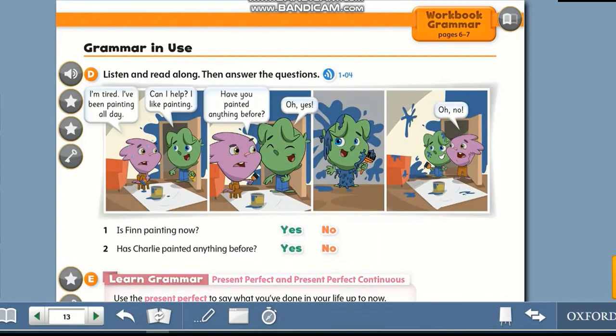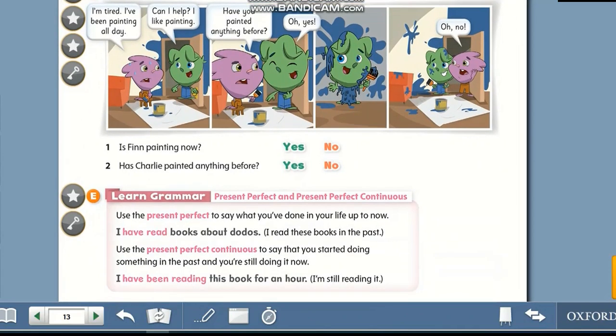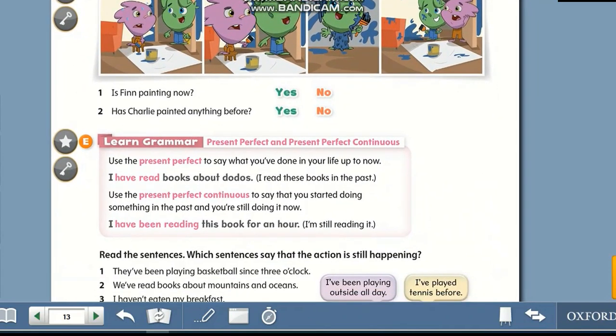So we'll go to the grammar box. Learn grammar: Present perfect and present perfect continuous. First, use present perfect to say what you have done in your life up to now. For example, I have read books about dodos. I read these books in the past, so this action is completed.